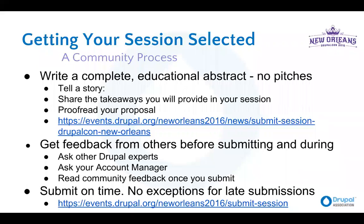As you write your abstract and ideally talk to the track chairs for ideas, go to other experts for feedback. You can even ask your account manager, or our CTO Josh Mitchell has offered feedback to people in the past. When you're ready to submit, go ahead and post it online — this is another reason to submit sooner than later, because the community will give you feedback. If they raise questions you want to address, you have a chance to edit and improve your abstract before the deadline. Make sure you submit on time — we don't have exceptions for late submissions.